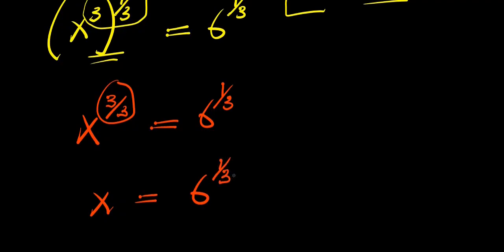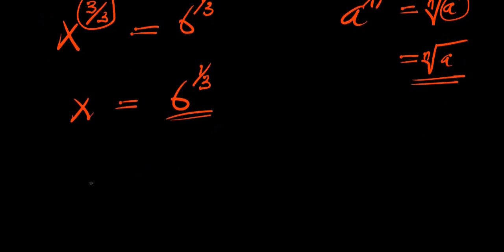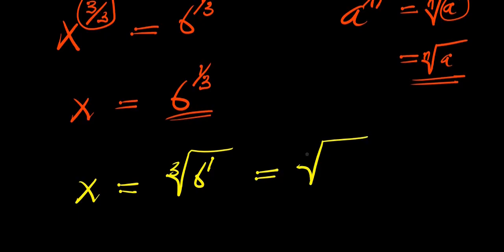Consider this identity: if you have a power 1 over n, this equals the n-th root of a power 1, and this means you have the n-th root of a, because a power 1 is a. Applying the same identity, x equals the cube root of 6 power 1, which means we have the cube root of 6. So this is our answer.